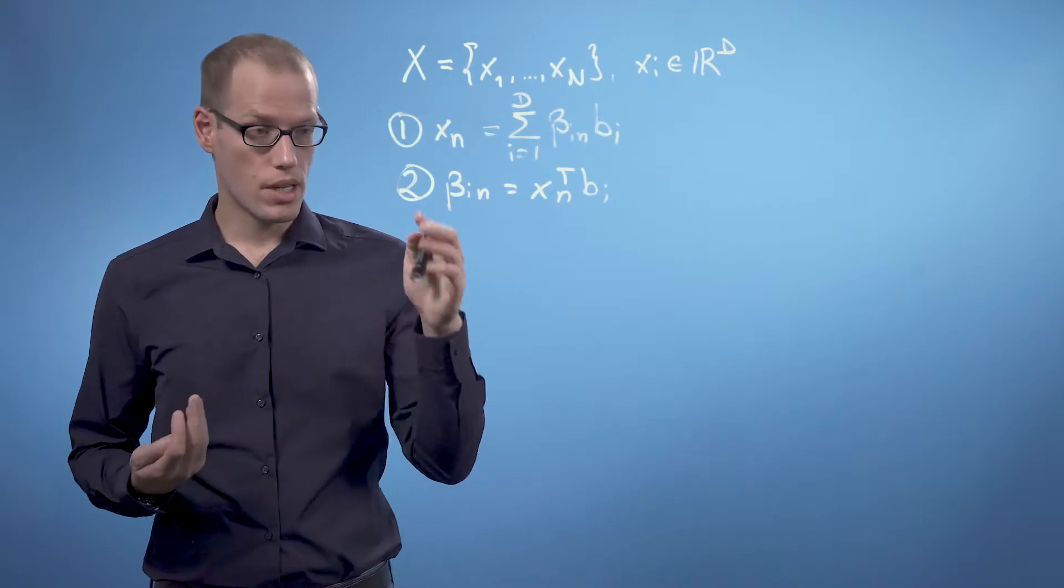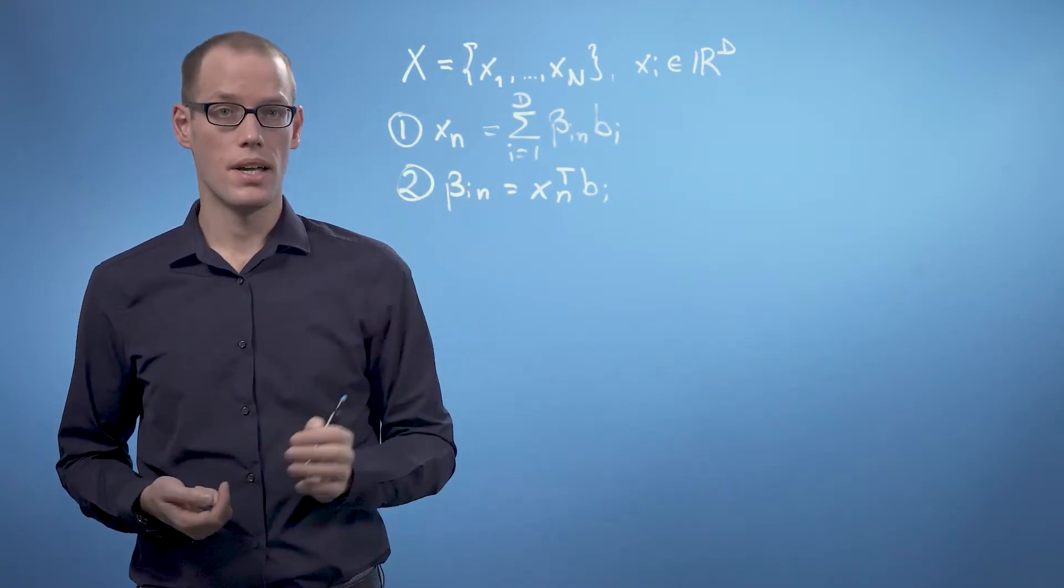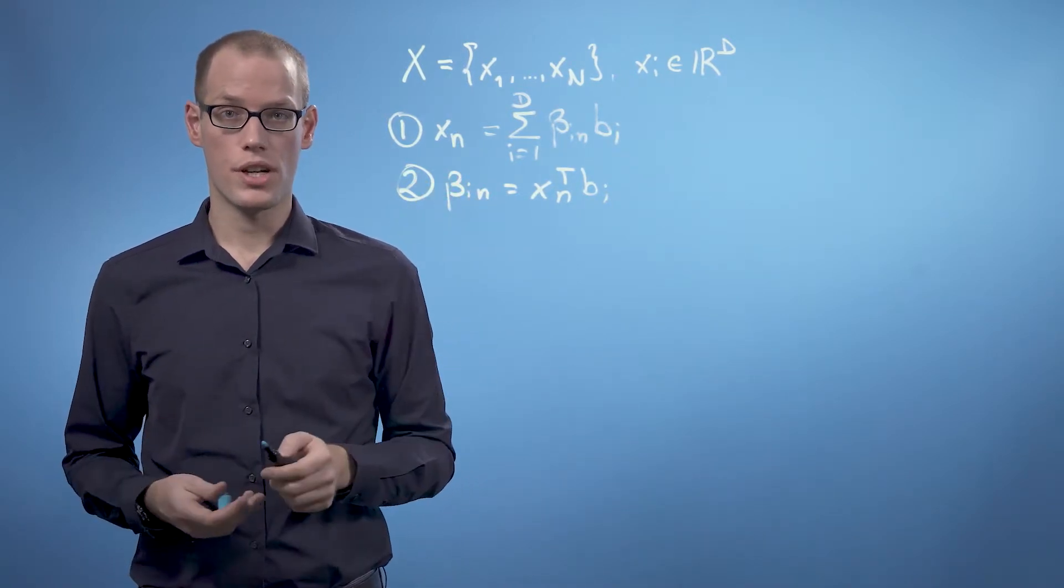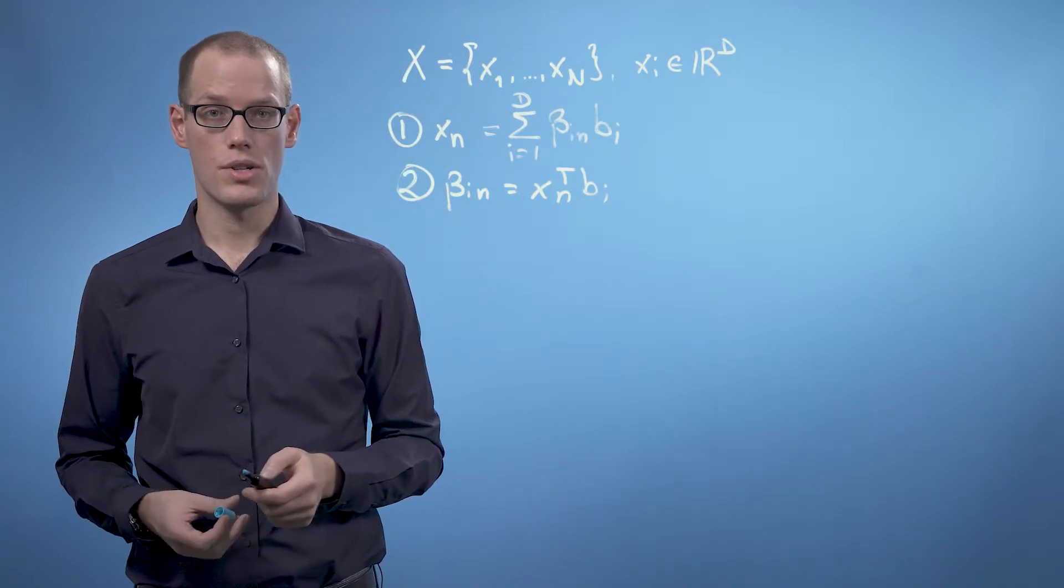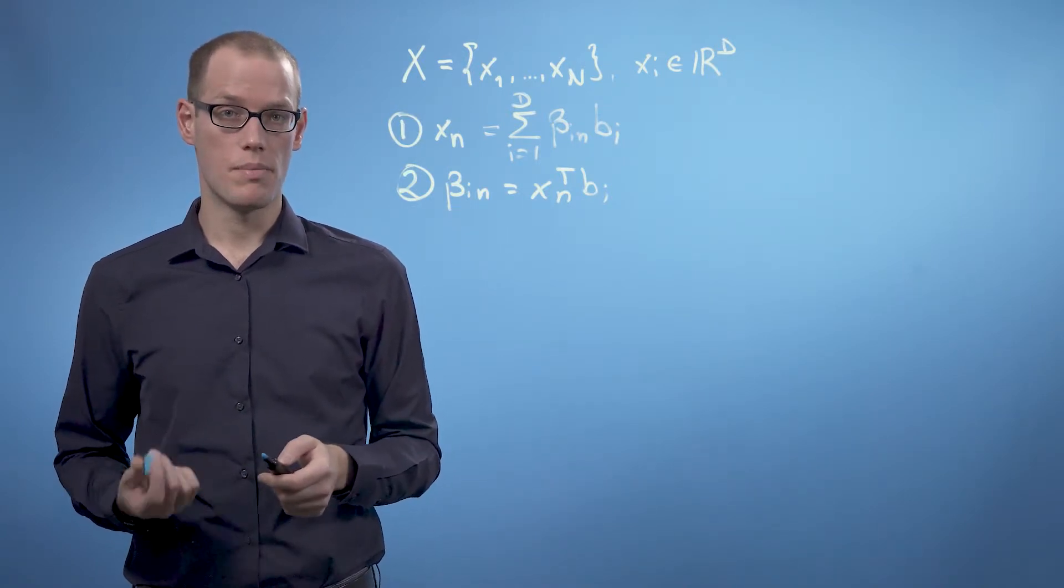This means we can interpret beta_in to be the orthogonal projection of X_n onto the one-dimensional subspace spanned by the i-th basis vector.